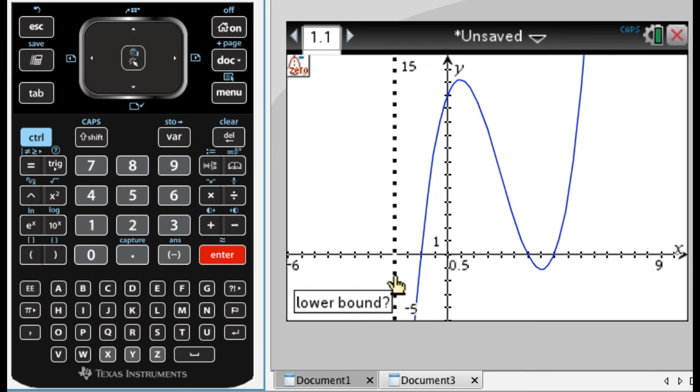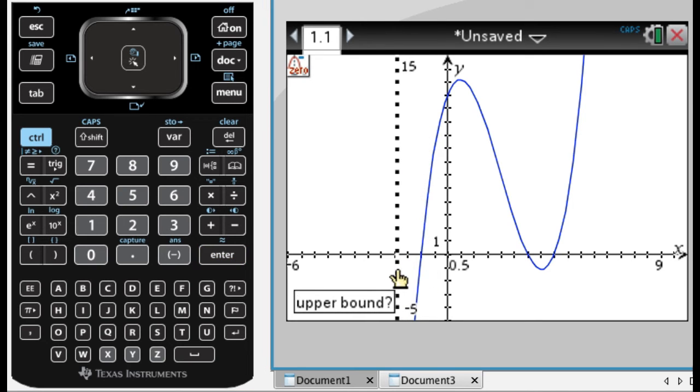So what you do is, you click to the left of it, so I want this x-intercept right here, and click to the left of it, and just drag until I get to the right of it, and then release it, and it gives me that. And then I'm going to have to do that again, and again.